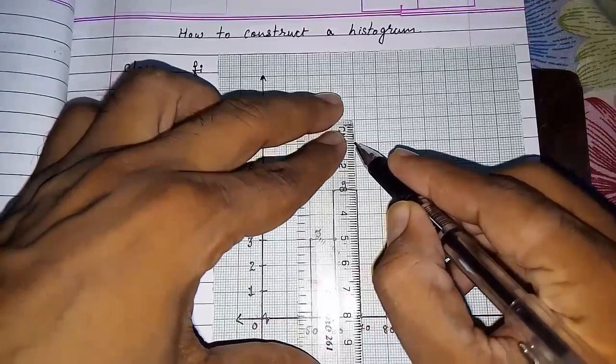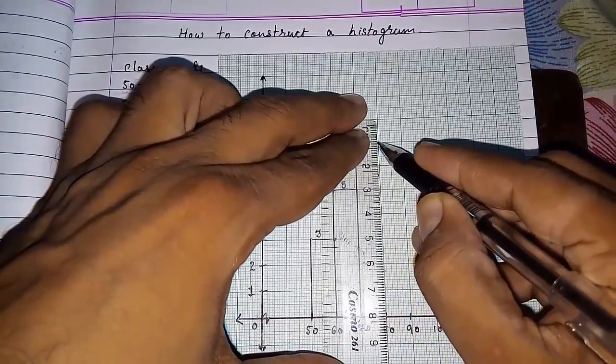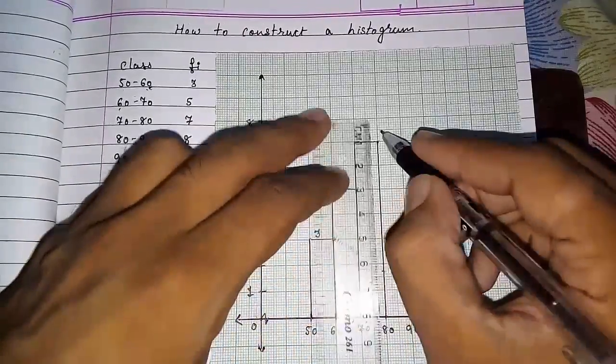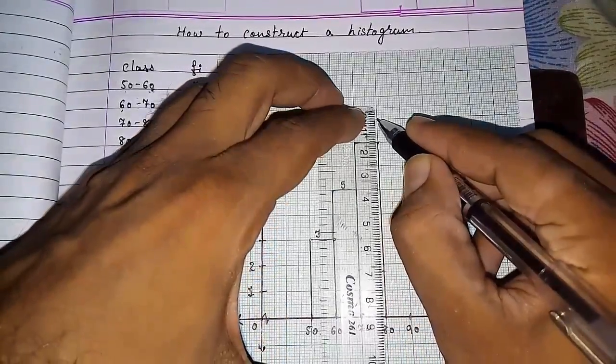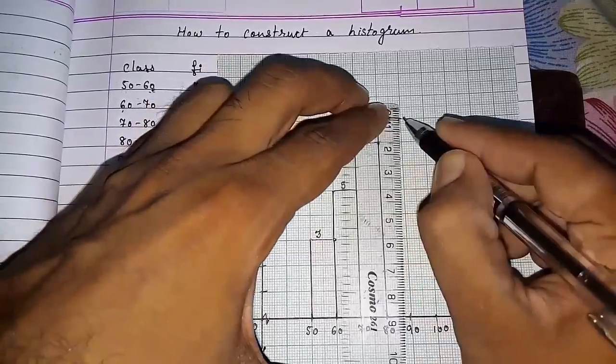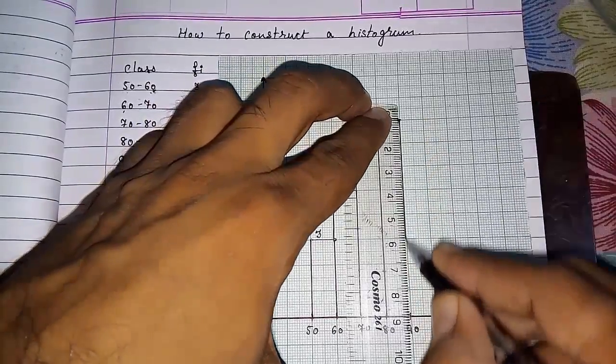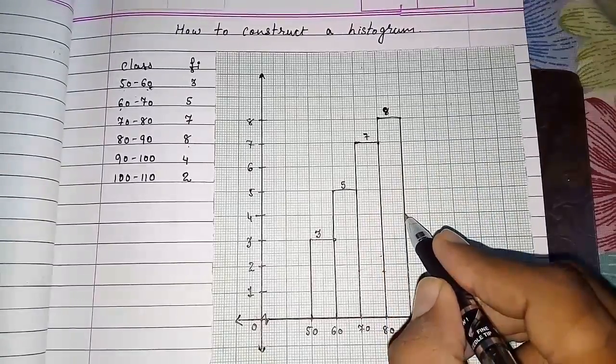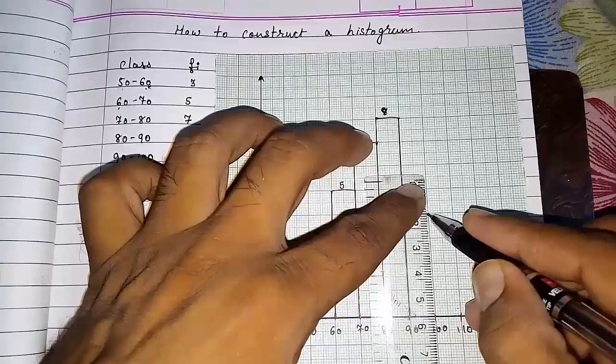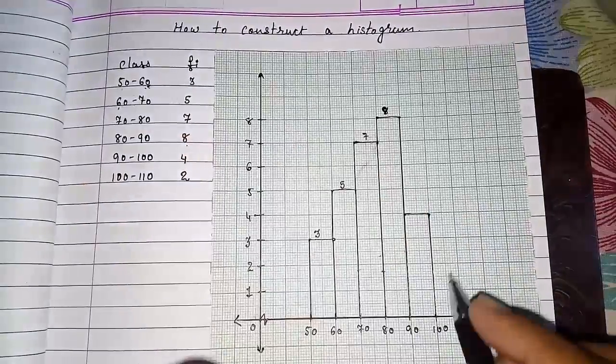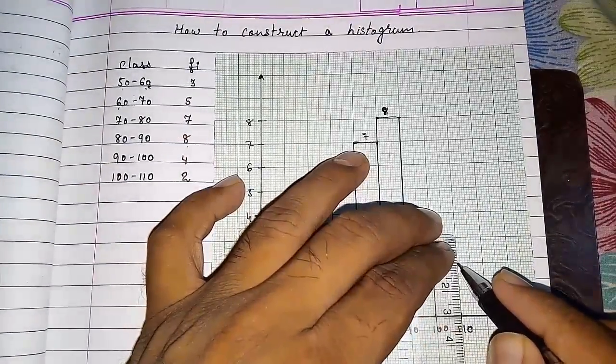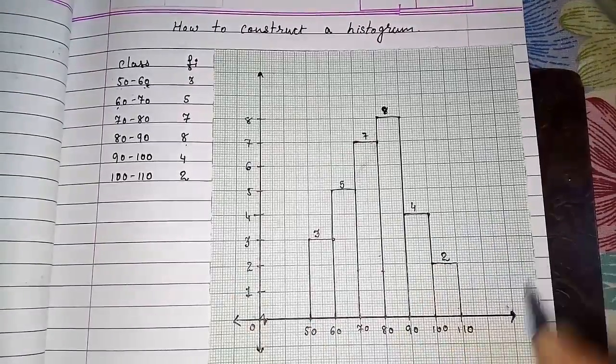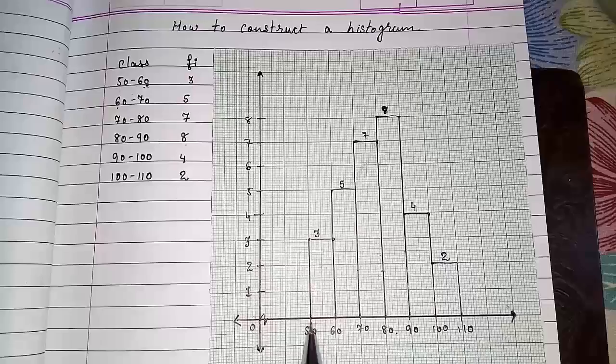Now 7. So here you can see 7 and 8. So again here it is 7. Now you have to increase. This will be your 8. Then 4. So you have to join here. This will be your 4. And the last is 2. This will be 4 and this will be 2. So this way you can draw any histogram.